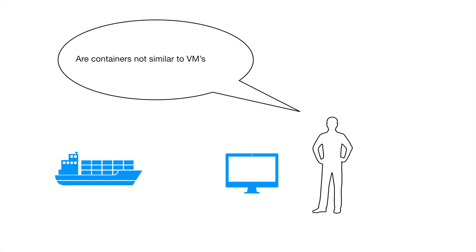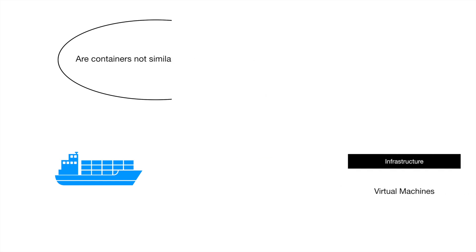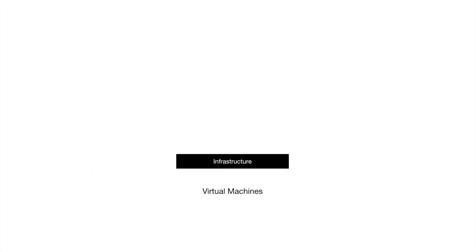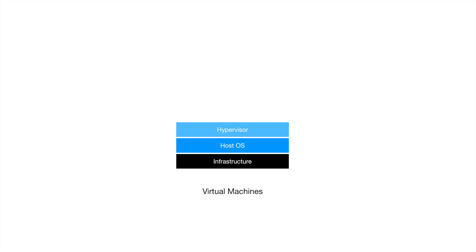How is a container different from a VM? To understand that, let's go through the core stack of VMs. At the very basic level, a virtual machine requires an infrastructure — hardware or a server provided by a cloud company like AWS. On top of that we need a host operating system, and then on top of that there is a hypervisor. The hypervisor's job is to use the components of the infrastructure and operating system to provide the resources needed to create virtual machines.